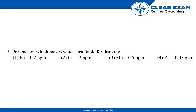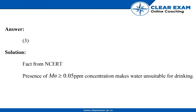The question asks which presence makes water unsuitable for drinking. We have to identify from the given components which one makes water unsuitable for drinking. The answer is manganese — the presence of manganese at 0.05 ppm concentration makes water unsuitable for drinking. So, the answer is Mn.